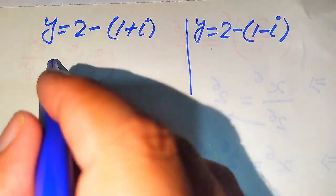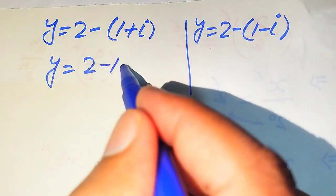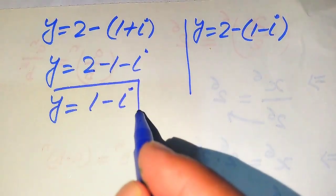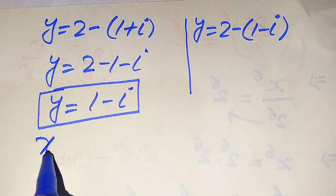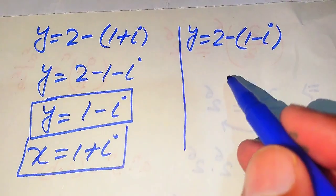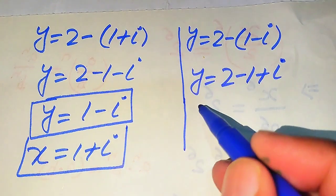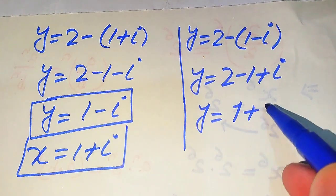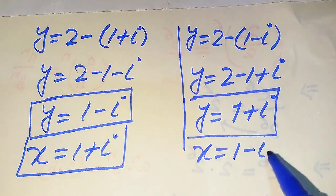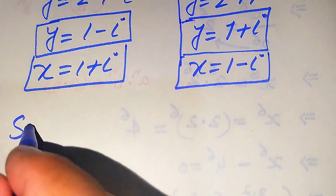Simplifying both cases: when x equals 1 plus iota, we get y equals 2 minus 1 minus iota, so y equals 1 minus iota. When x equals 1 minus iota, we get y equals 2 minus 1 plus iota, so y equals 1 plus iota.